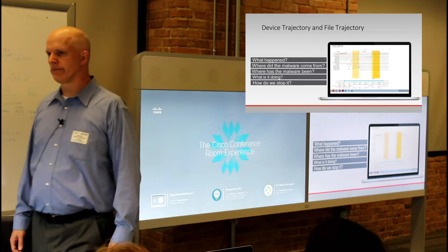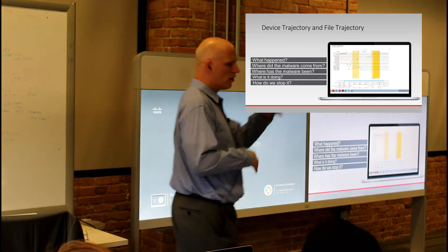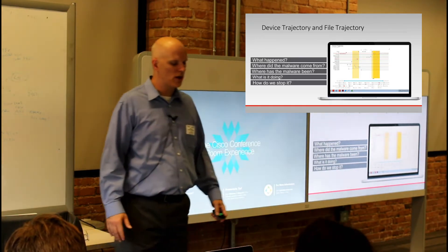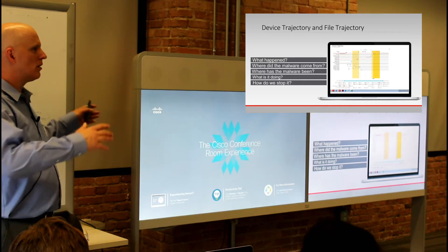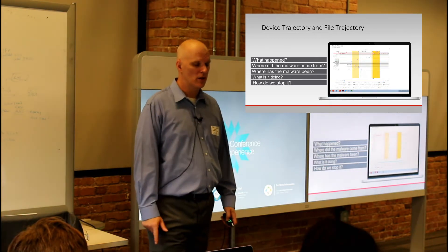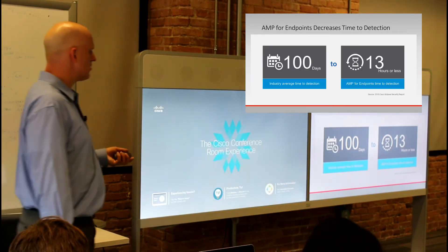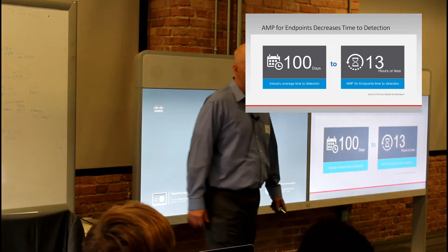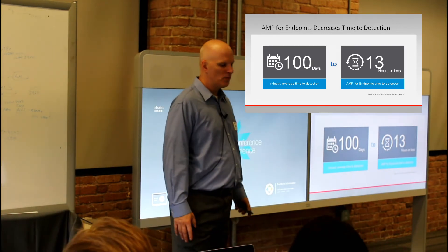AMP for endpoints has device trajectory and file trajectory features. Device trajectory shows you everything a file has done on a given endpoint — file system changes, registry actions, anything within that endpoint. File trajectory shows you which endpoints across your entire enterprise have a particular file, helping you track down patient zero. Notably, when new malware is introduced, the average detection time for most antivirus or anti-malware is 100 days — a lot of damage can be done in 100 days. For AMP for endpoints, that time is 13 hours.